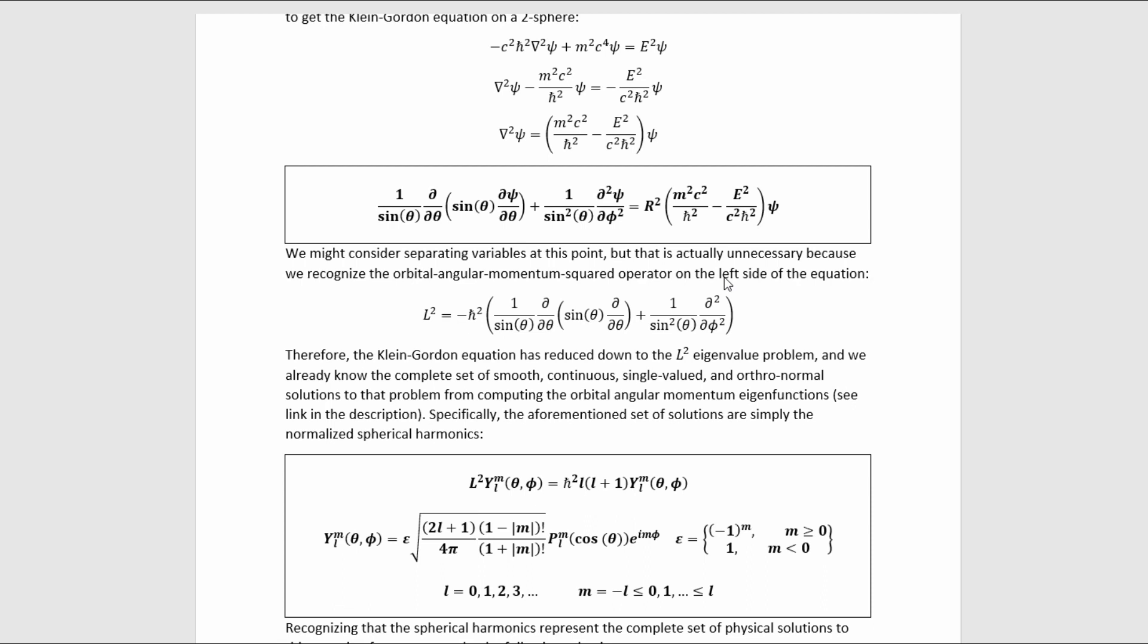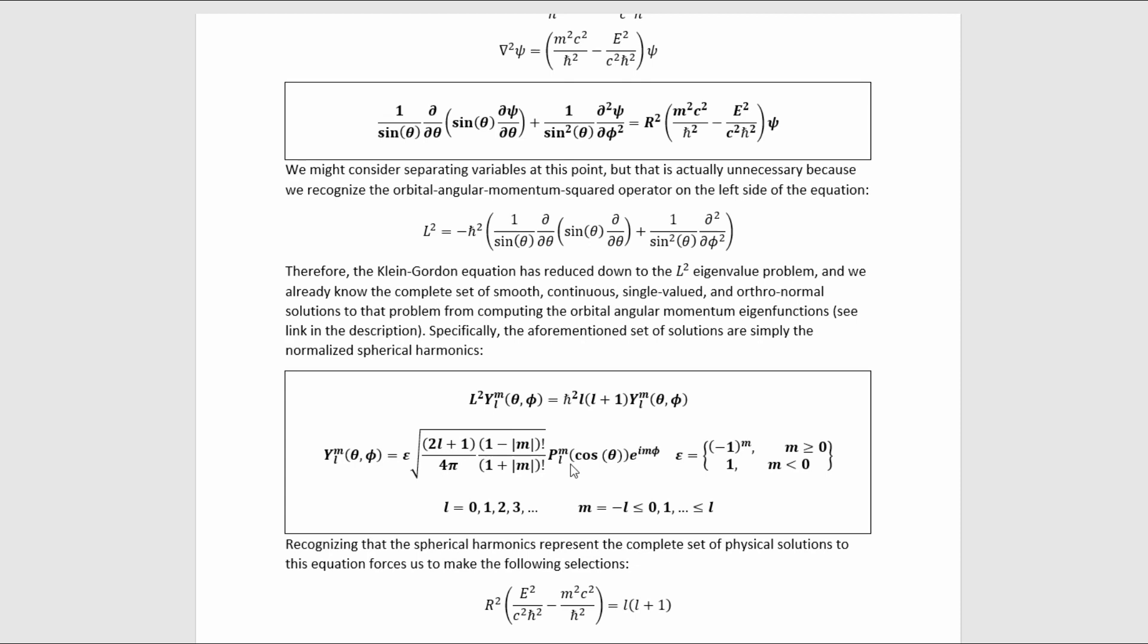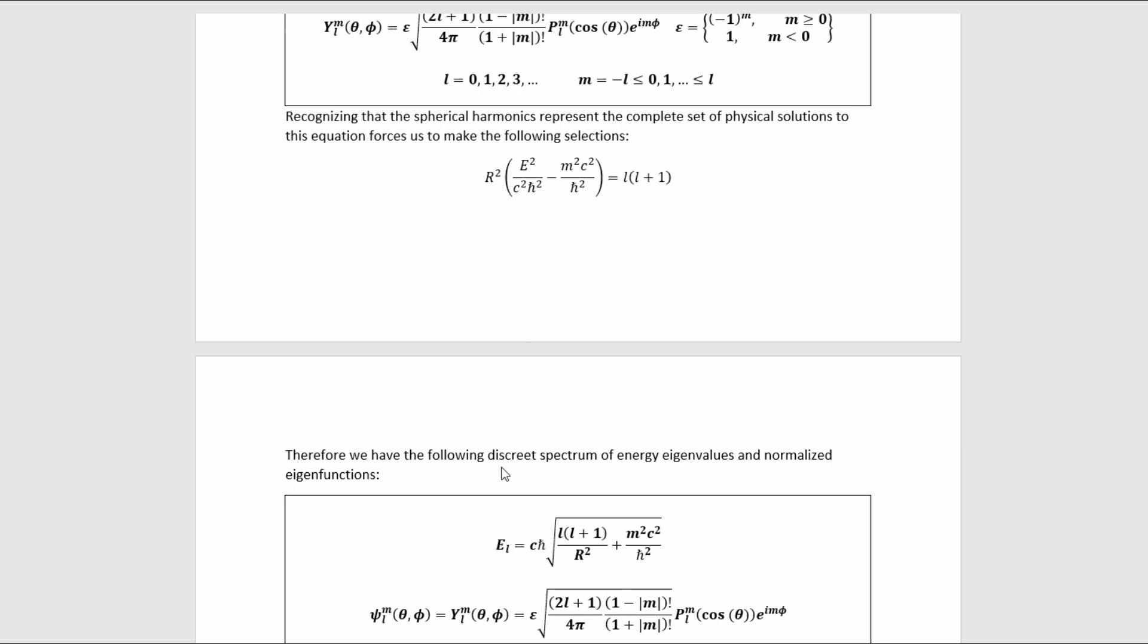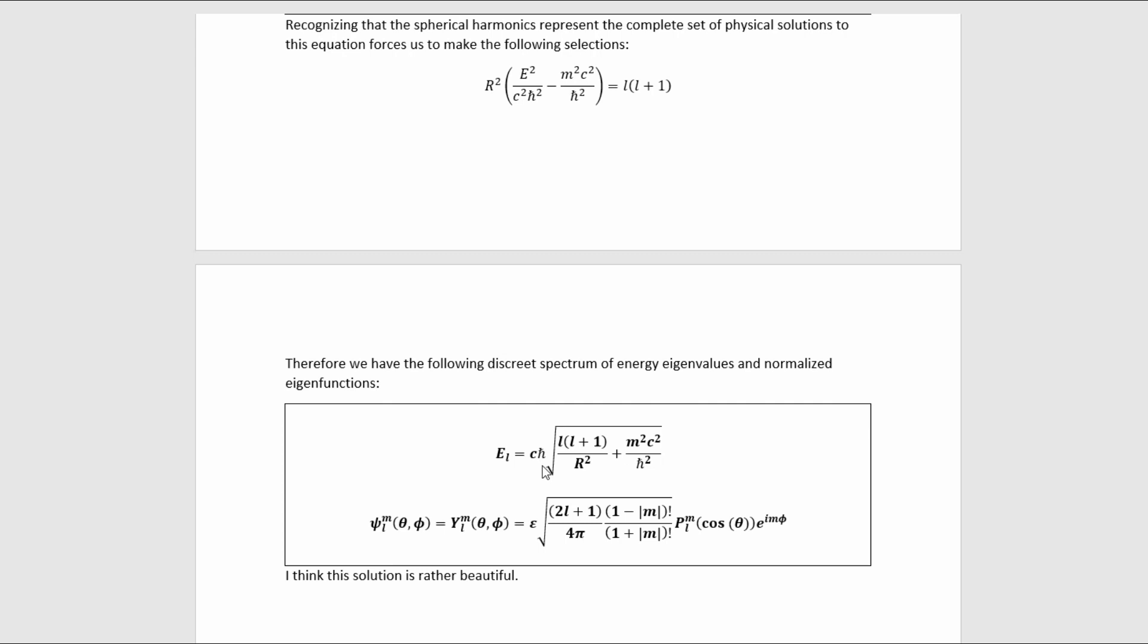Now, if we compare this equation to that one, being careful to keep track of factors of h-bar squared and minus signs, we realize that we must actually make this assignment in order to make these equations match. And because this is the complete set of physical solutions and is defined only for a discrete set of values of L and M, we see that by making that assignment here, we're actually discretizing the energy because only energies are allowed that ultimately collapse this down to equal this for non-negative integer Ls.